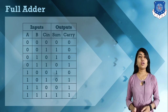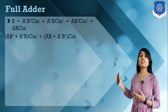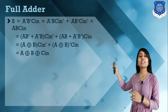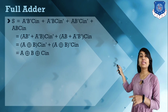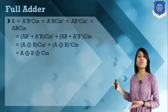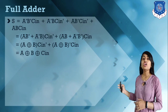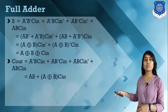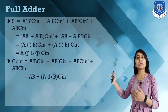From the truth table we can calculate equations for sum and carry. We write the minterms where sum equals 1: A'B'C_in + A'BC_in' + AB'C_in' + ABC_in. Simplifying this gives A XOR B XOR C_in. For the carry equation, simplifying gives A·B + (A XOR B)·C_in.